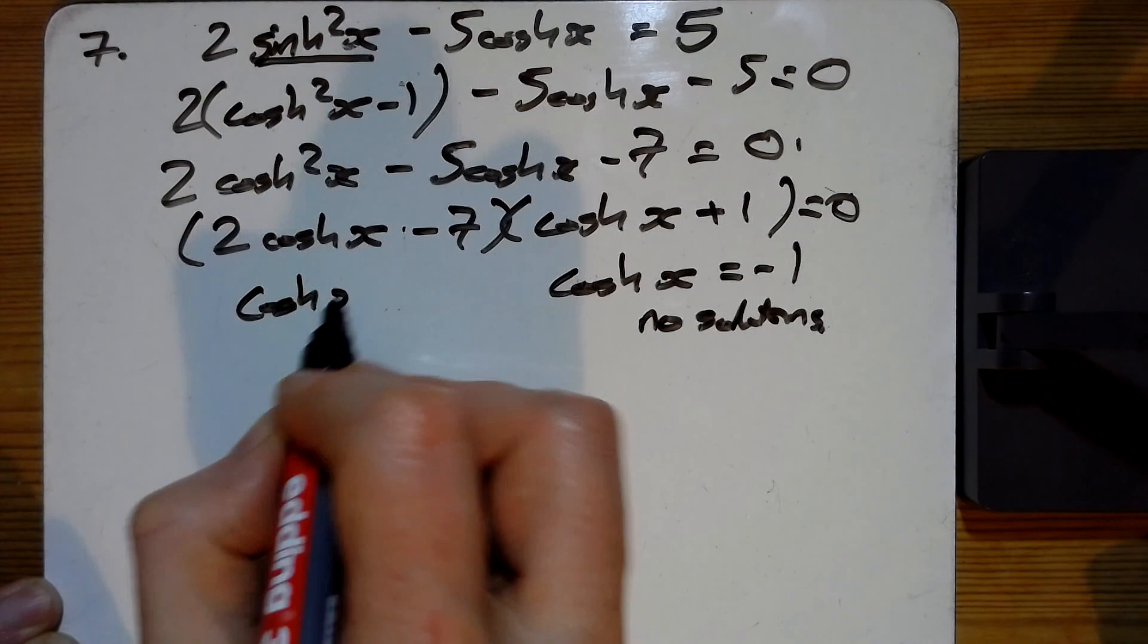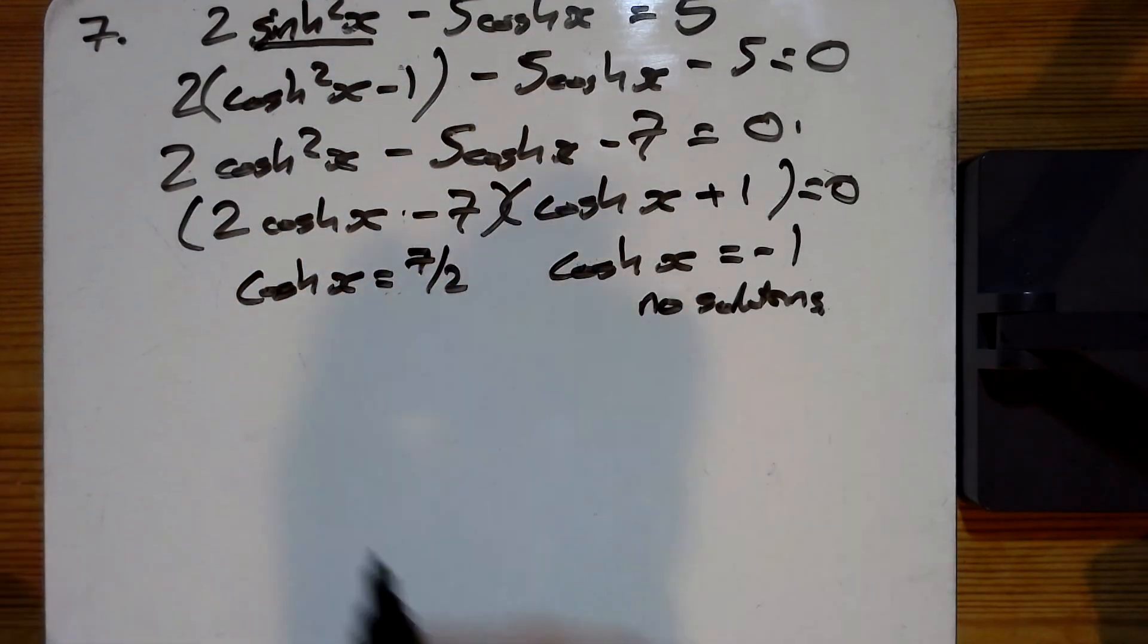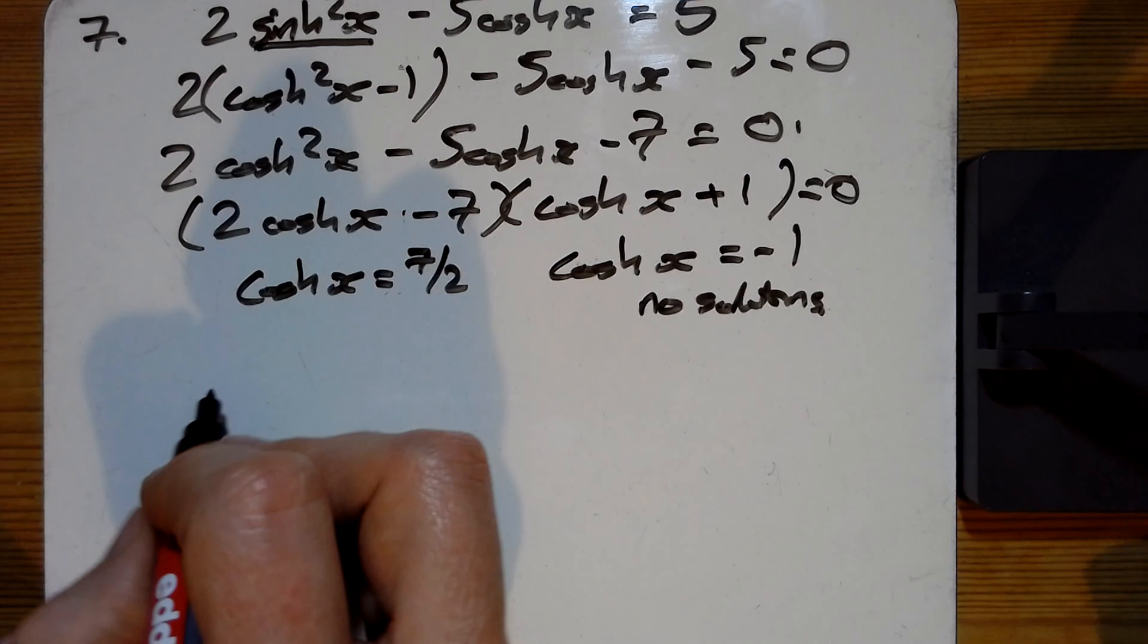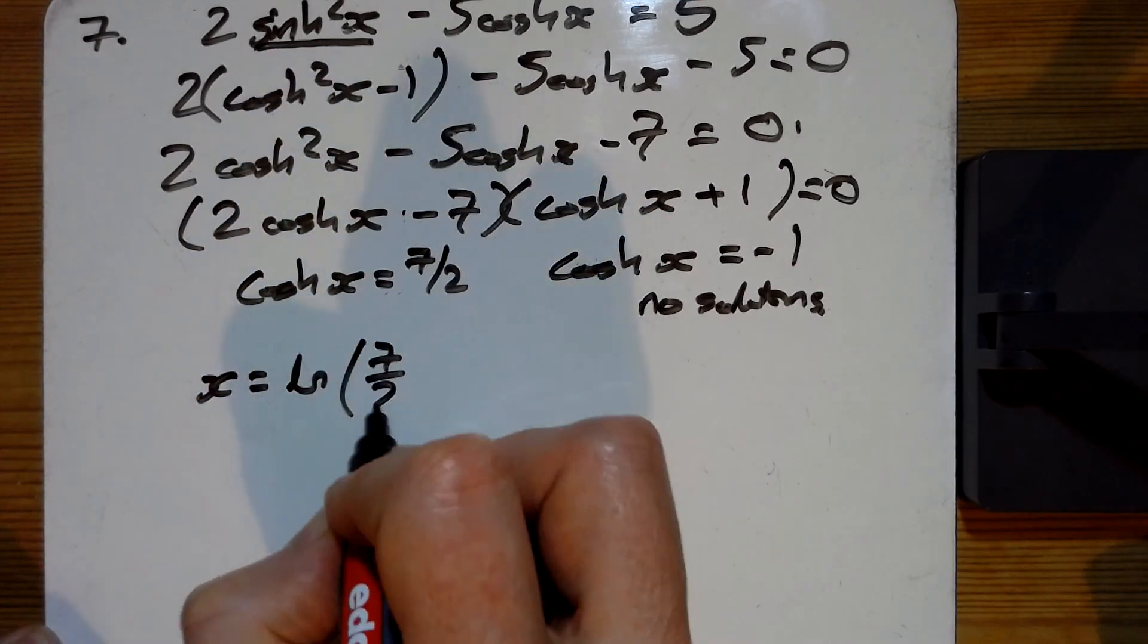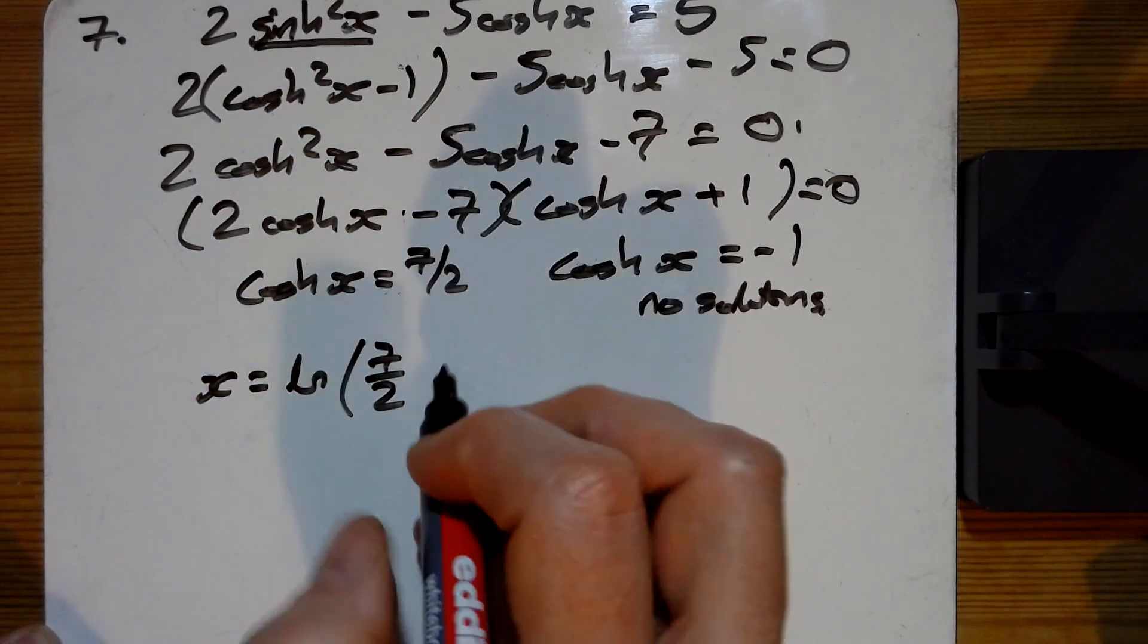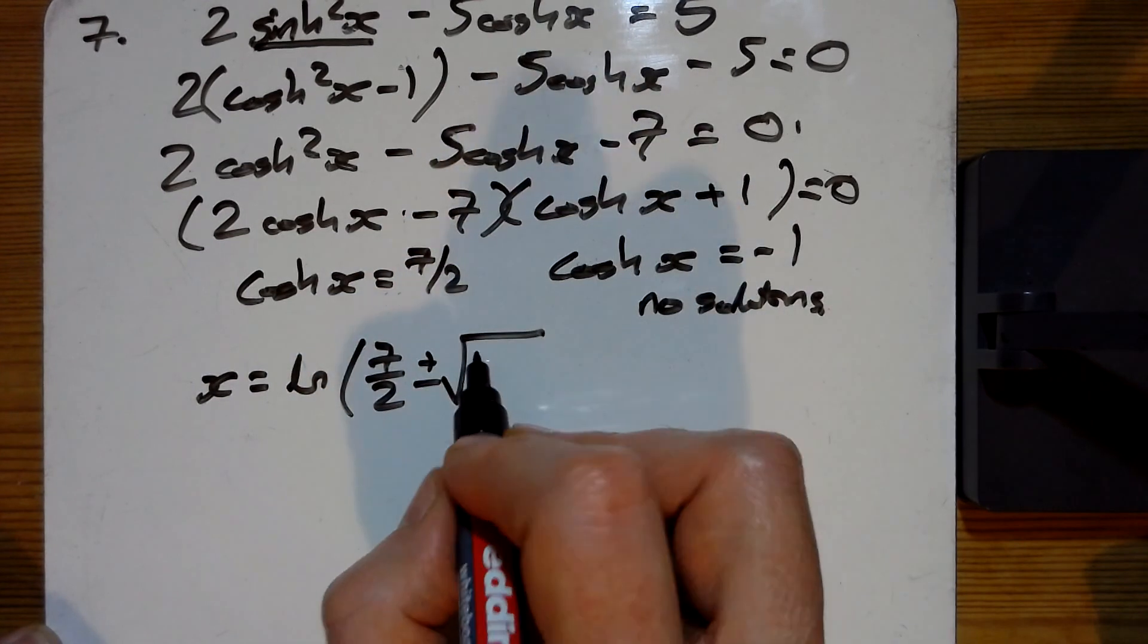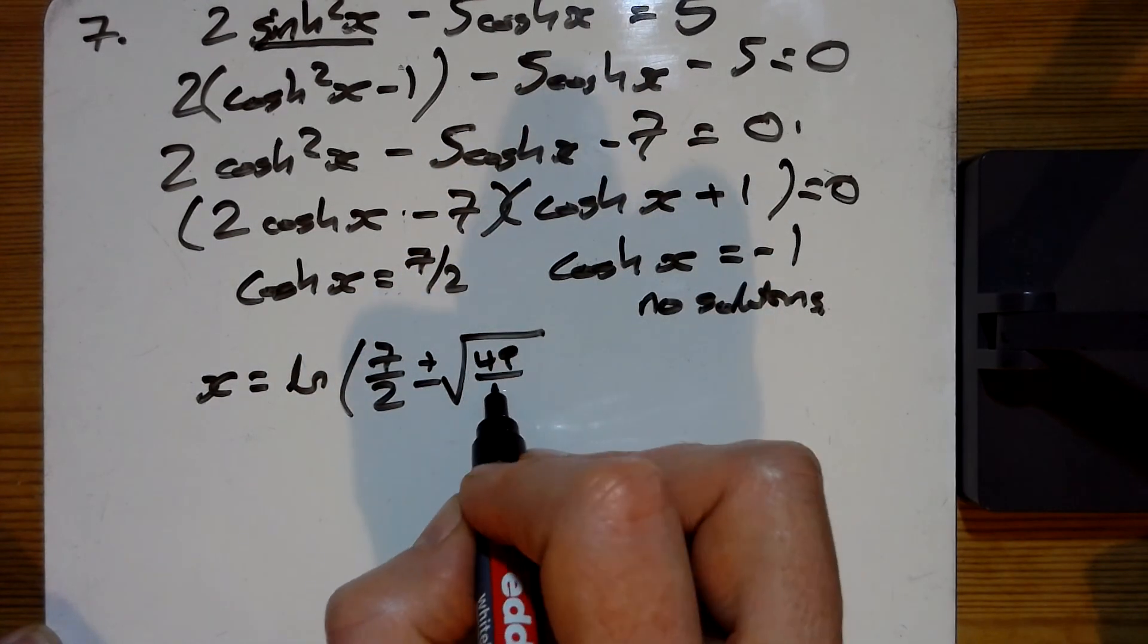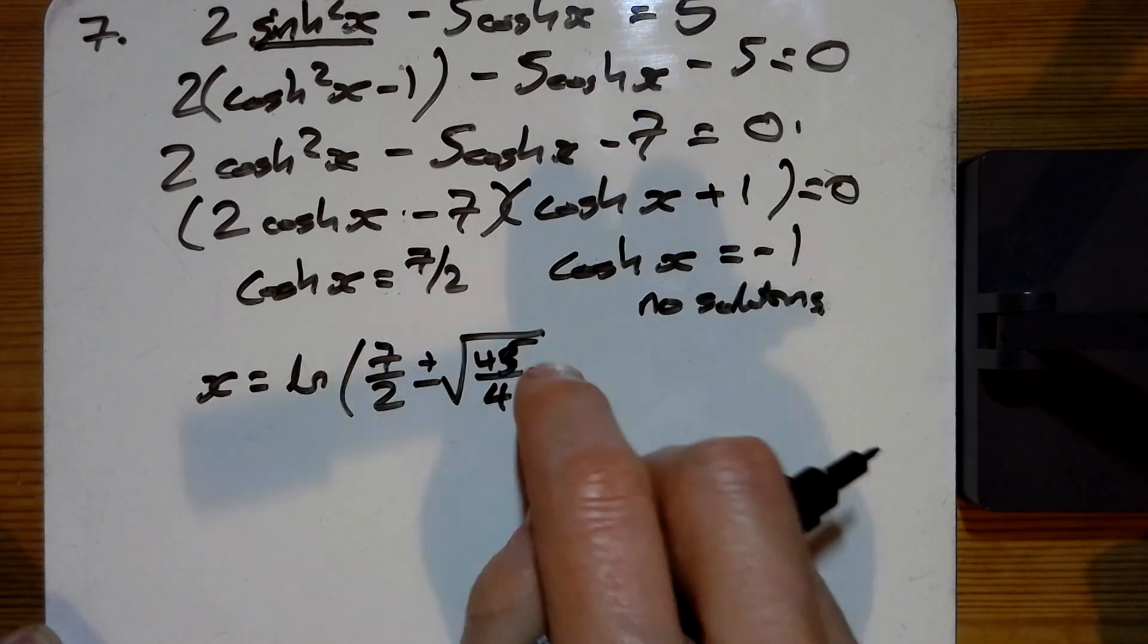And coshx = 7/2. The natural log answer for that is x = ln of 7/2 plus or minus the square root of (7/2)² - 1, so that's 45/4.